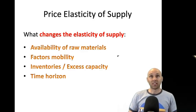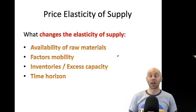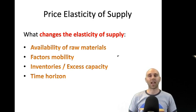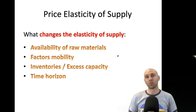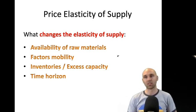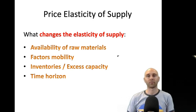What changes the elasticity of supply? There's the availability of raw materials, the mobility of your factors of production, and inventories or excess capacity. Inventories and excess capacity are particularly relevant during panic buying — there's been plenty of long-run supply, but in the short run there haven't been those inventories. That relates to the time horizon: supply of certain goods in supermarkets has been very inelastic in the short term, unable to respond to changes in demand, but hopefully that sorts out in the long term.